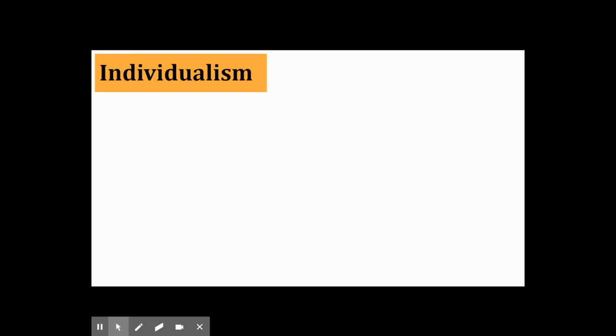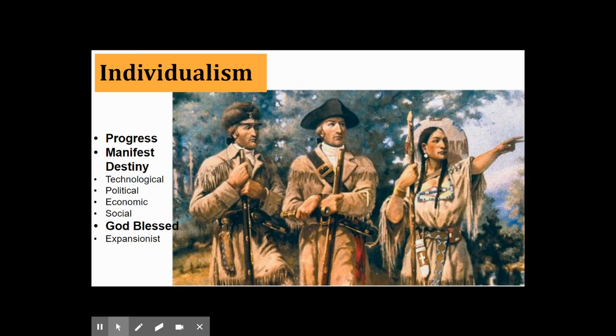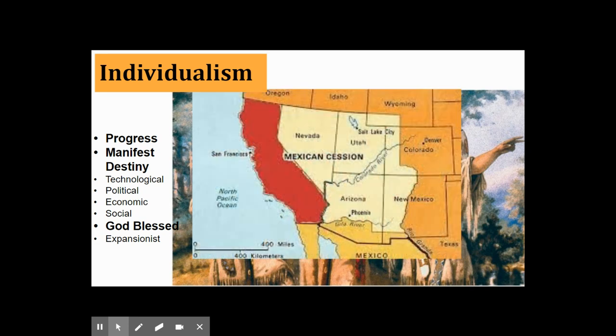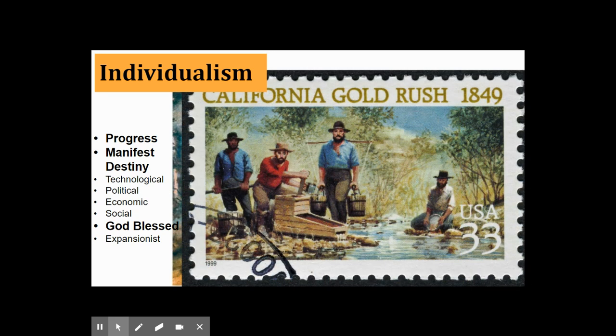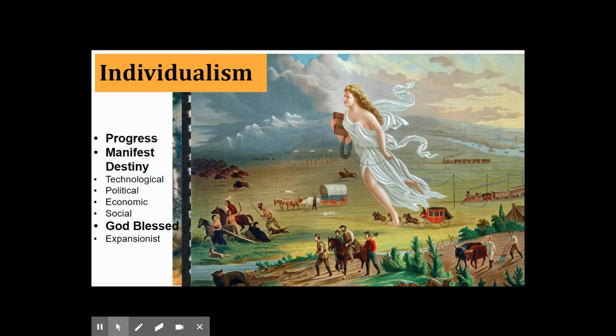The characteristic of individualism. Individualism in an American context is about the attributes and success of the individual. That progress — technological, political, social — at the core of that movement is the success of the individual. The expansion, or manifest destiny, which is the God-blessed outlook many Americans had in the development of our country, the California Gold Rush — any individual could pull himself up by his bootstraps and get out there panning for gold.